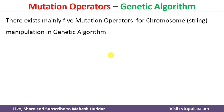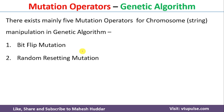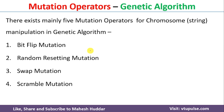There are mainly five mutation operators in genetic algorithm. The first one is known as BitFlip mutation operator. The second one is Random Resetting mutation operator. The third one is Swap mutation operator. The fourth one is Scramble mutation operator. And the fifth one is Inversion mutation operator. We will discuss each of these mutation operators one by one.